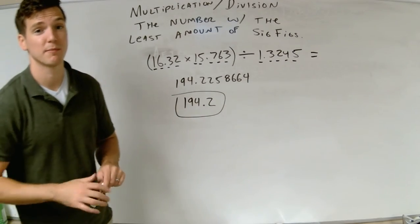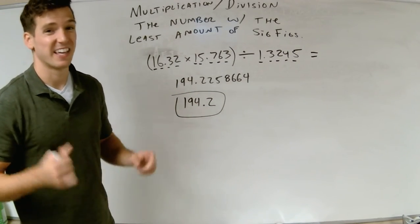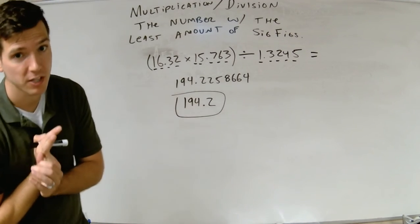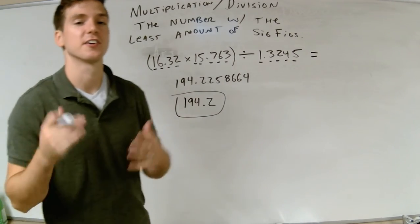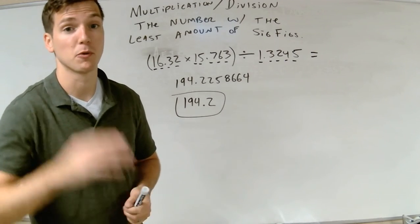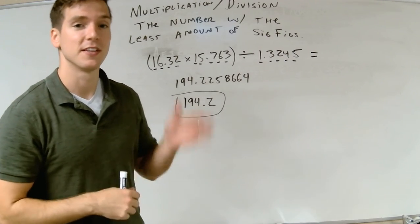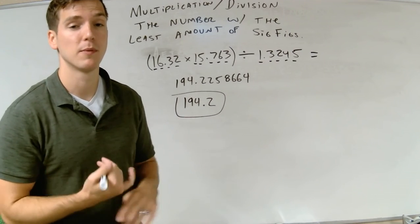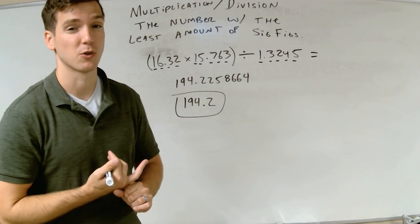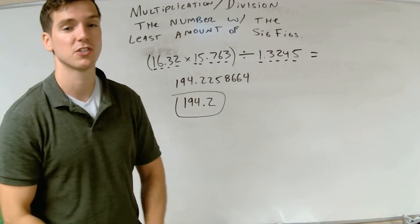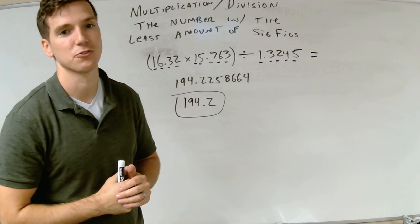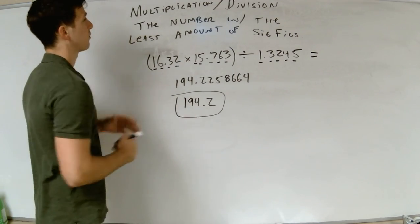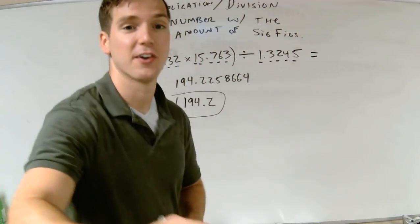I'm at my 20-minute mark so I'm wrapping up. If you have a problem with both addition and multiplication, follow the multiplication rule — multiplication and division supersedes the addition-subtraction rule. So if you see a problem mixing both operations, follow the multiplication and division rule. That is sig figs — look for some practice and have a great day.